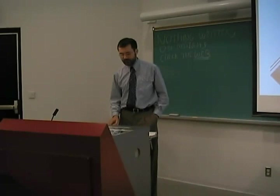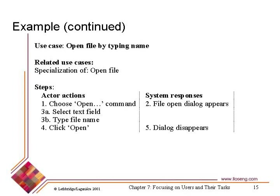'Open file by typing name' is a specialization of 'open file.' The first actor action is 'choose open command,' file open dialogue appears — the same as before. Steps 3A and 3B use the same numbering from the previous use case: 'select text field, type file name' specializes 'specify file name.' 'Click open' specializes the confirm approach. Then the dialogue disappears. So a lot of it is the same, with extra details added, which is why it's a specialization.